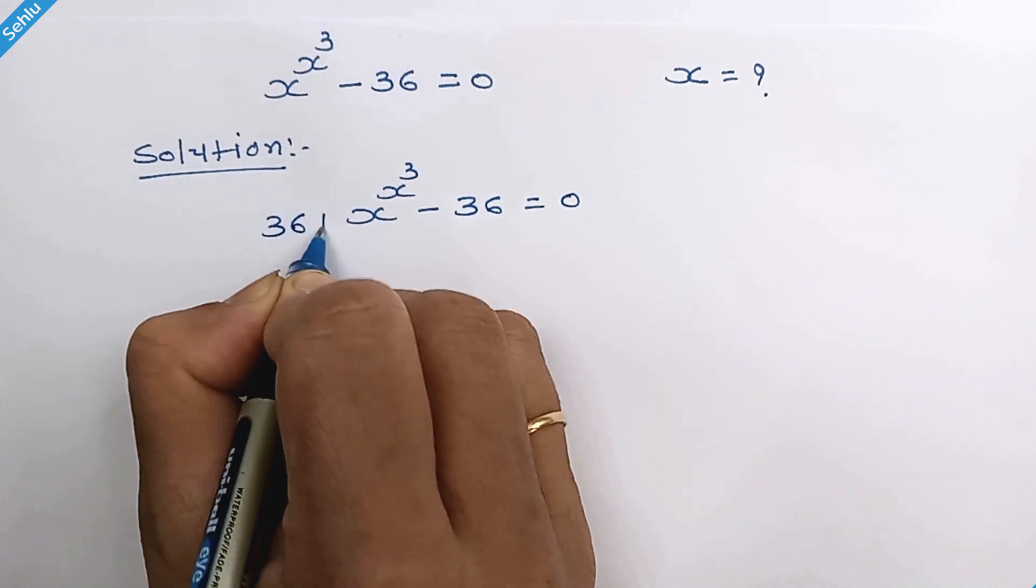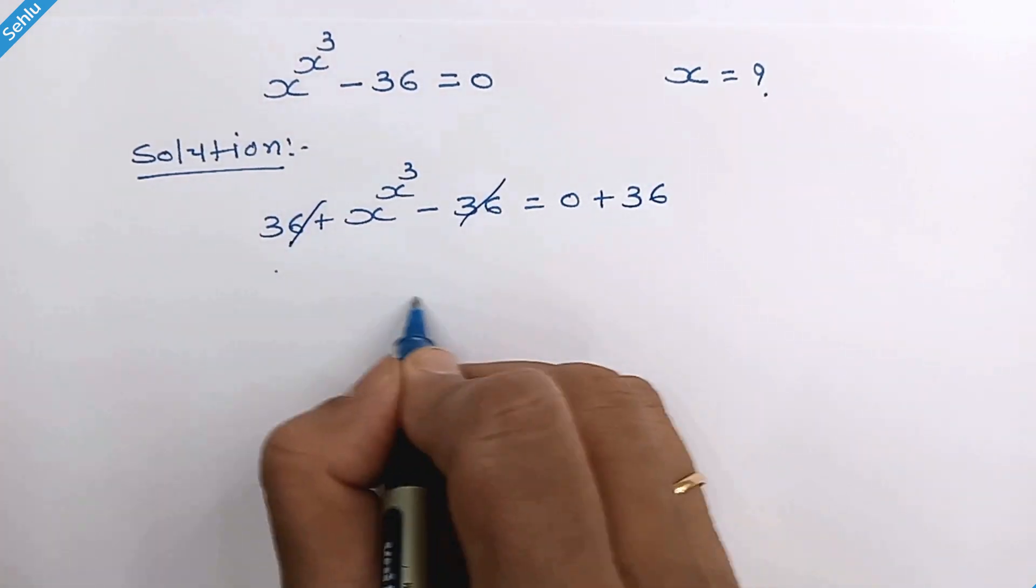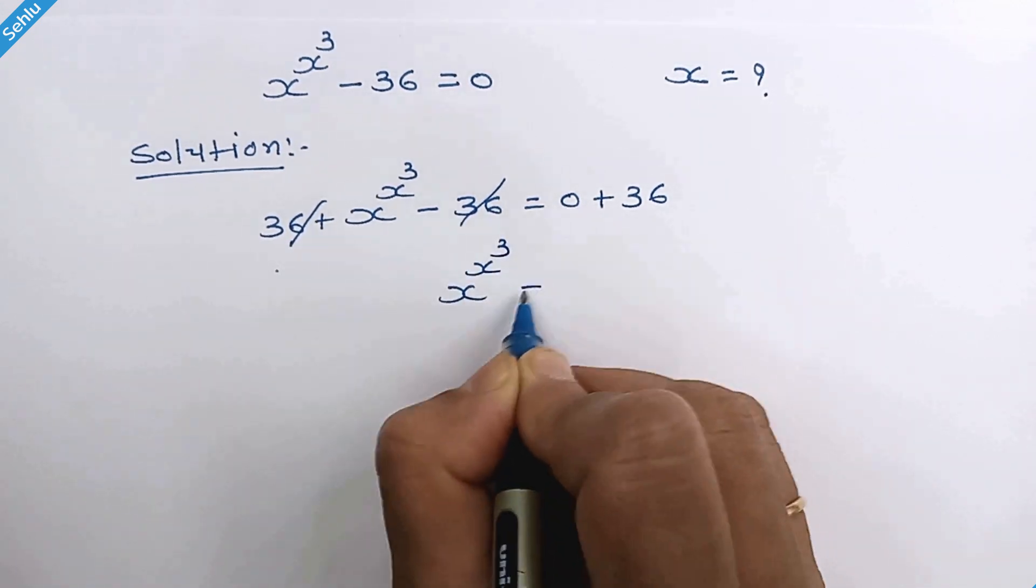We will add 36 to both sides. These two will eliminate. Now we have x raised to x cube equals 36.